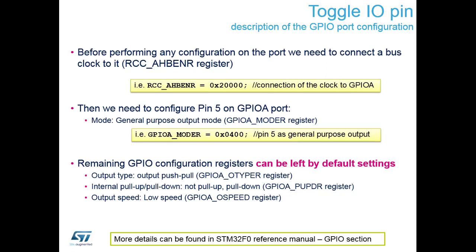The value 0x20000 hexadecimal is what we need to load into the AHB enable register to connect the clock to GPIO Port A. The remaining GPIO configuration registers — output type, internal pull-up/pull-down, and output speed — don't need to be changed; their reset conditions are perfectly suited for our hands-on example.